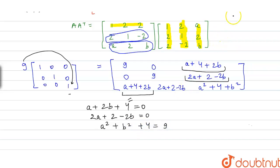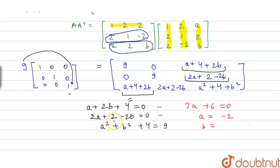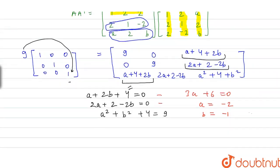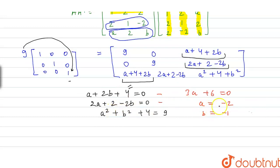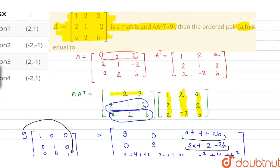Adding the two linear equations (A + 4 + 2B = 0 and 2A + 2 − 2B = 0), we get 3A + 6 = 0, so A = −2. Substituting A = −2 into the first equation gives −4 + 2 = 2B, so B = −1. Verifying in A² + B²= 5: 4 + 1 + 4 = 9. ✓ So the ordered pair (A, B) is (−2, −1).